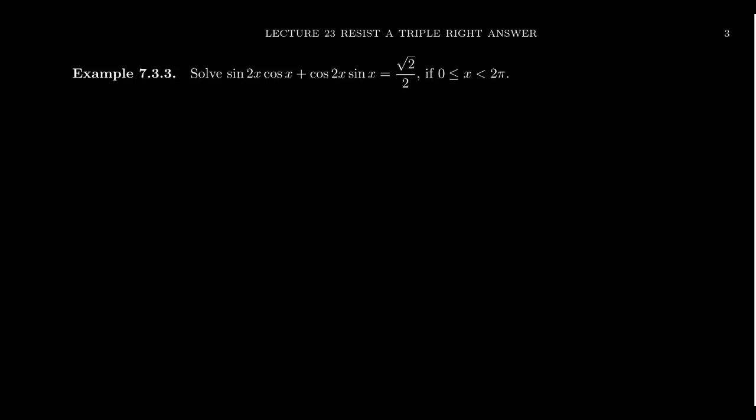In this video, we're asked to solve the equation sine of 2x times cosine of x plus cosine of 2x times sine of x equals root 2 over 2. We're going to do this on the domain 0 to 2π, so we want to solve this in terms of radian measure.